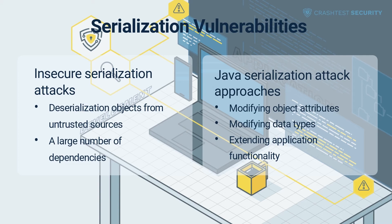There are multiple ways to exploit insecure serialization vulnerabilities in Java, such as modifying object attributes and data types, as well as extending application functionality.